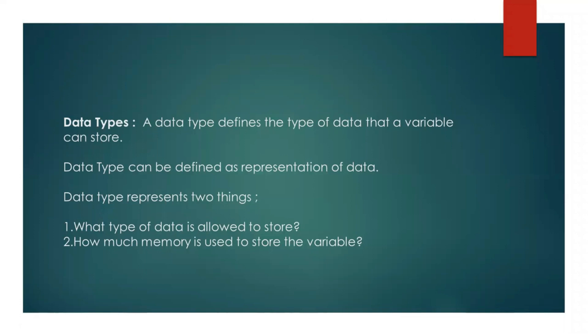A data type defines the type of data that a variable can store. Data type can be defined as a representation of data. Data type represents two things: what type of data is allowed to store and how much memory is used to store the variable.